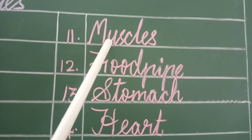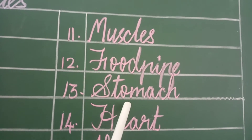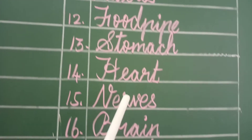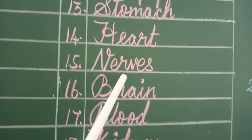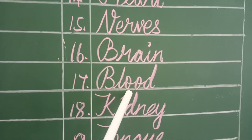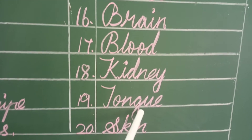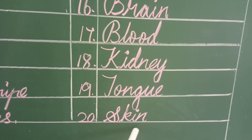Muscles, foodpipe, stomach, heart, nerves, brain, blood, kidney, tongue, skin.